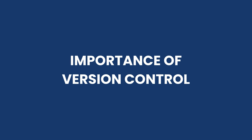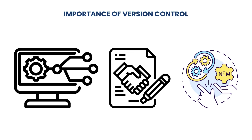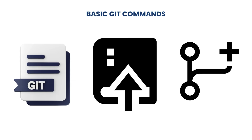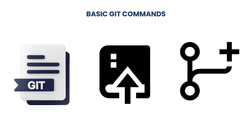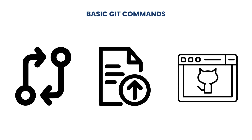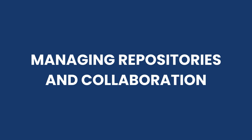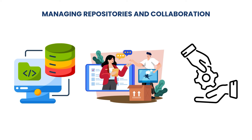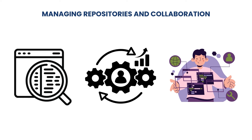Version control and Git: version control is crucial in collaborative projects as it tracks changes, enables multiple developers to work simultaneously without conflicts, and provides a history of project evolution. Essential Git commands include git init for initializing a repository, git add for staging changes, git commit for saving changes, and git push for uploading changes to platforms like GitHub. Managing repositories involves organizing code, handling branches for feature development, and using pull requests to facilitate collaboration and code review.